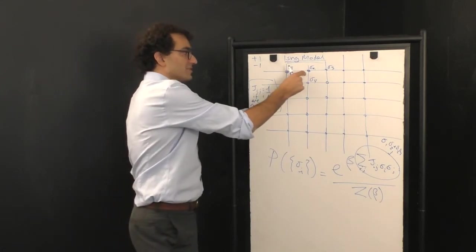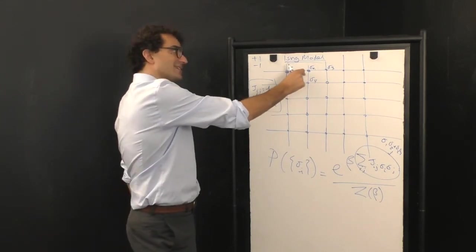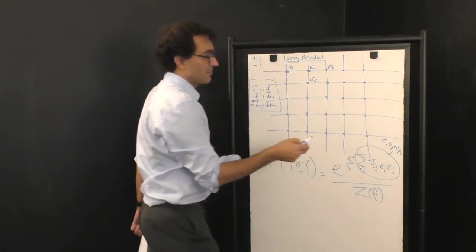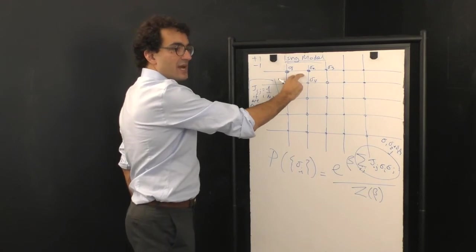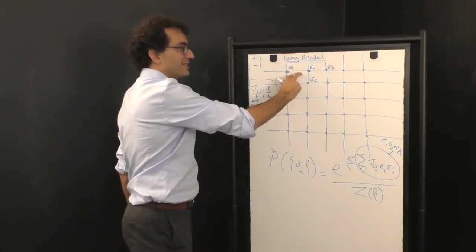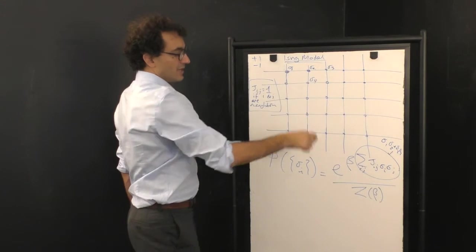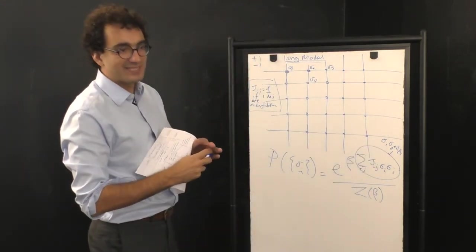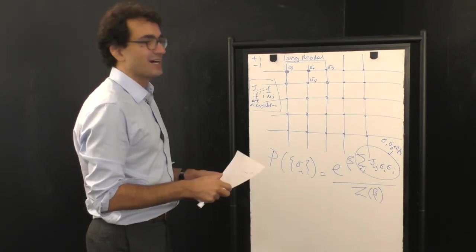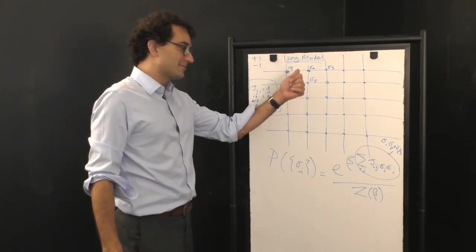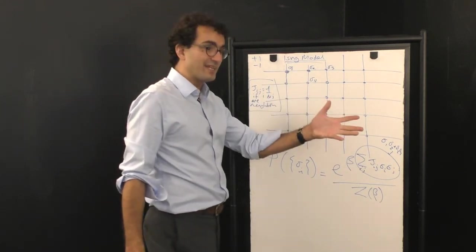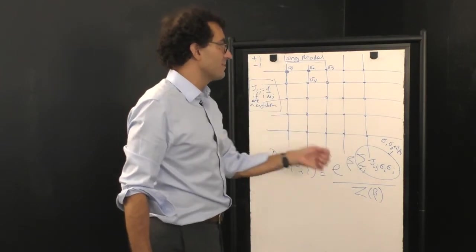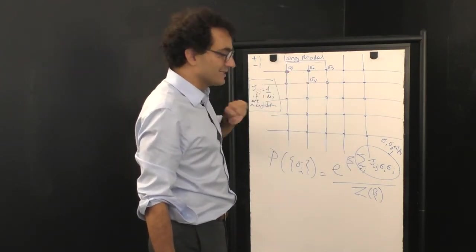Notice that if two neighbors have the same state, if they're both plus 1, then that term will contribute positively to the sum. Similarly, if they're both minus 1, then they'll both contribute positively to the sum, because minus 1 times minus 1 is 1. So what this sum is doing informally is it's counting up the number of pairs that are in the same state and subtracting off the number of pairs that are in opposite states. So you take that, which is a sum essentially telling you how coordinated all the nodes are. That sum gets larger and larger as more and more neighbors stay in the same state.